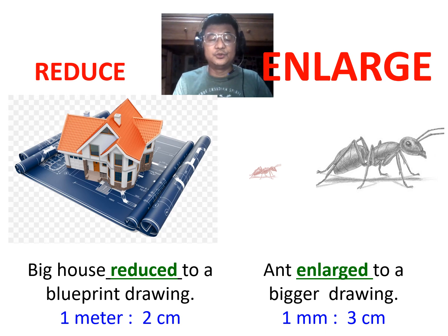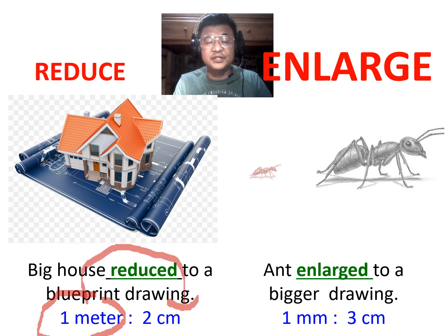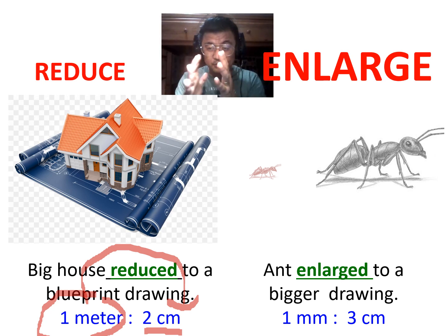Now, to reduce, for example, a big house was reduced into a blueprint, right? You cannot draw an exact measurement of a house on paper. So what do they do? They reduce the size. For example, 1 meter of the real house, take note, 1 meter of the real house is actually equivalent to 2 centimeters in the drawing. So bigger to smaller.